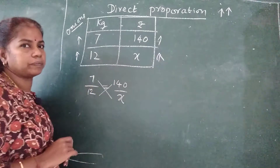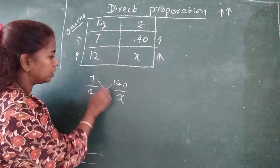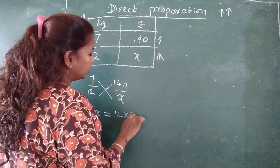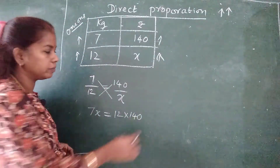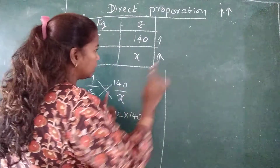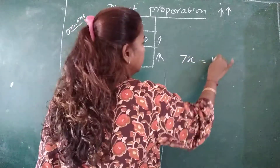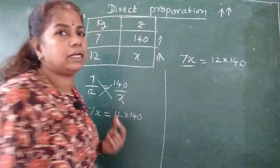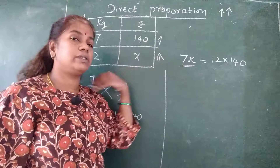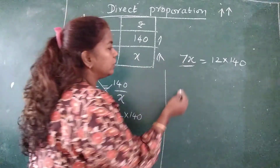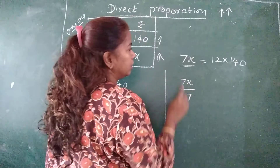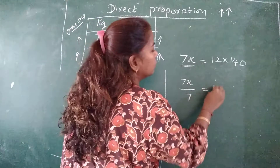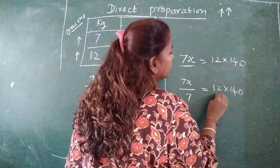For direct proportion, you will write as it is: 7 upon 12 equals 140 upon x. Then cross multiply. 7 into x equals 12 into 140, so 7x equals 12 into 140. Here 7 is multiplied to x, so I will take division on both sides: 7x upon 7 equals 12 into 140 upon 7.